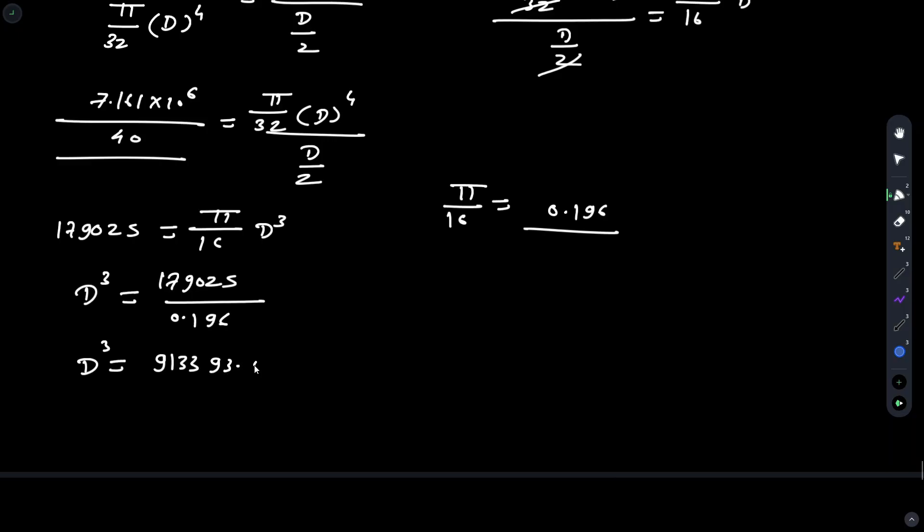Taking the cube root, we get D equals cube root of 913393.85, so D equals 97.02 millimeters.